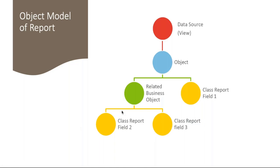A business object in Workday is the object where Workday stores data. For example, there will be a business object related to organizations that stores all organization-related data in the form of fields — organization type, organization name, organization hierarchy, and so on. You can think of a business object as a warehouse: it's the parent storage for all data related to a particular subject, and within it are small fields storing subsets of that data.